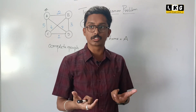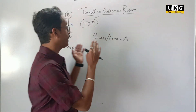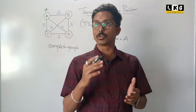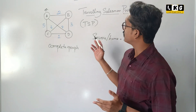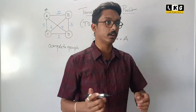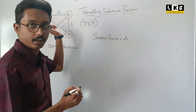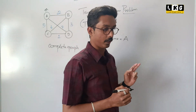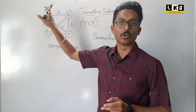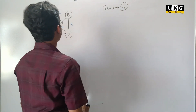What is a feasible solution? Feasible solutions are all possible solutions which we can find for this graph. And out of all the feasible solutions, we will find the optimal solution. Now let us start with this home graph, that is A. He will start his tour from node A. The source node is A.